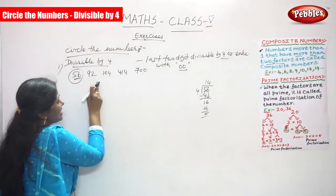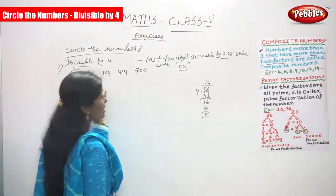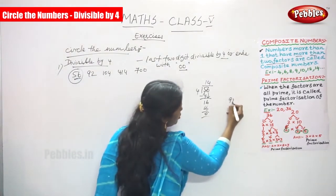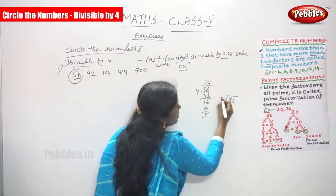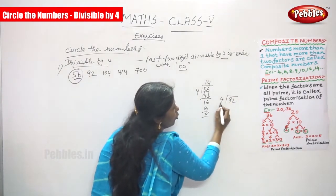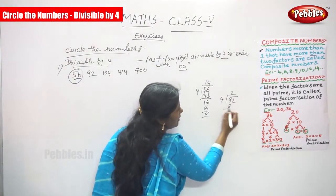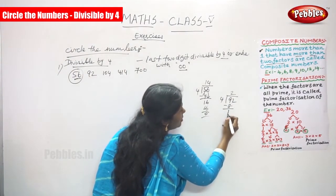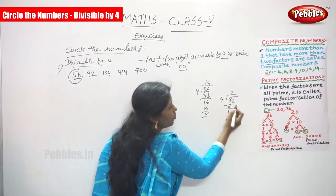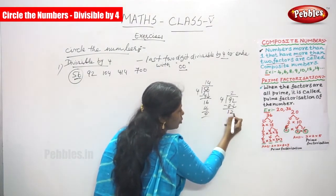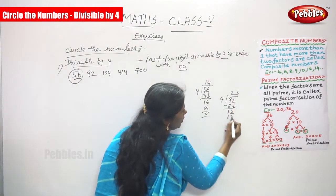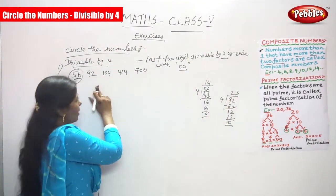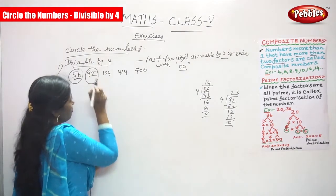The next number is 92. You have to find out whether this number is divisible by 4 or not. 4 twos are 8, 9 minus 8 gives remainder 1. Since 1 is less than 4, bring down the next digit, which is 2, making 12. 4 threes are 12, remainder is 0. So 92 is also divisible by 4.